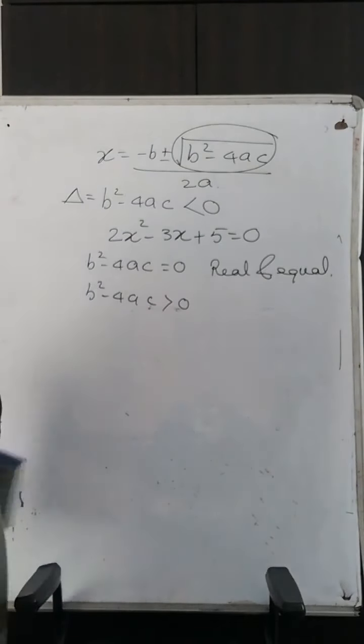Let's take an example to find the nature of the roots. It is given that 2X squared minus 3X plus 5 equals 0. Comparing with the general form AX squared plus BX plus C equals 0, we get A=2, B=minus 3, and C=5. Finding the discriminant: B squared minus 4AC equals 9 minus 40, which is minus 31. Since B squared minus 4AC is minus 31, which is less than 0, no real roots exist.